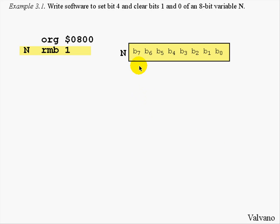Assume for now that the variable N has 8 bits specified by b7, b6, b5, b4, b3, b2, b1, and b0. And the problem says make bit 4 equal to a 1 and make bits 0 and 1 equal to a 0. One way we could solve this is to bring the hexadecimal constant $10 into register A and store it out into N.